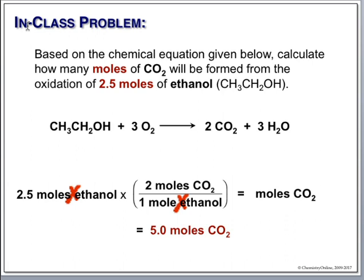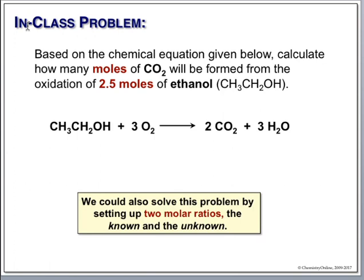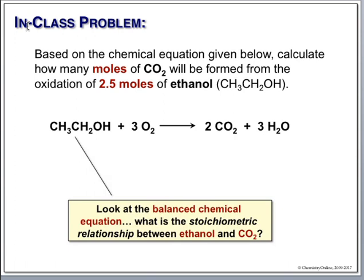All the problems today can be done using given-ratio-find. But we're going to introduce a slightly different way called the two-ratio method, because once you get used to it, it's faster and easier and flows better on your calculator. Let's redo the ethanol problem using two ratios — a known and an unknown. The known ratio is what we used before: two CO2s for every ethanol, as given by our balanced equation.